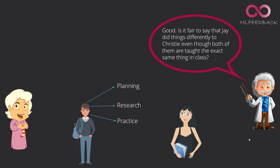Albert says, good. Is it fair to say that Jay did things differently to Kristi even though both of them were taught the exact same thing in the same class? Granny says, most certainly. That's the reason why he scored better. What might be the other reason?